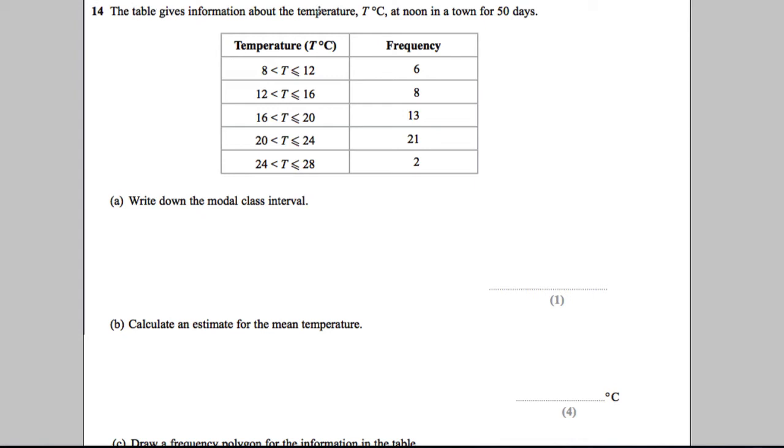The table gives information about the temperature T at noon in a town for 50 days. So let's just take a second to think about what the table means. It means that on 6 days there was a temperature that was bigger than 8 but less than or equal to 12.